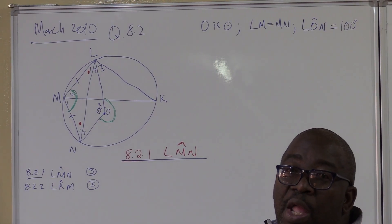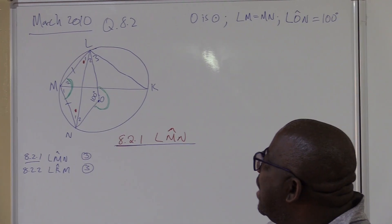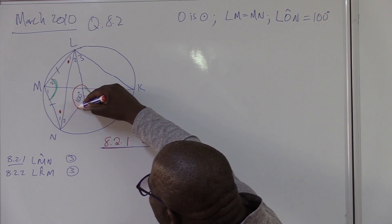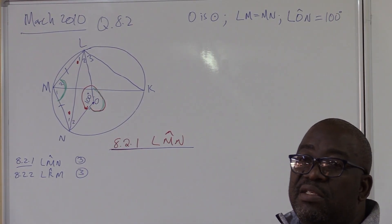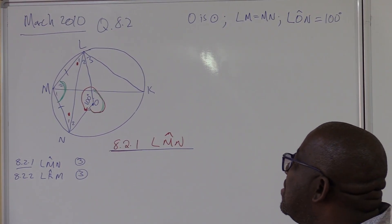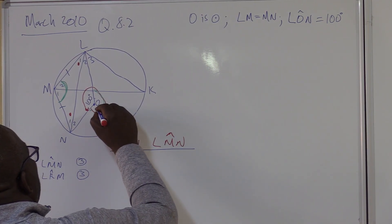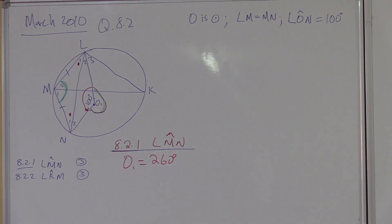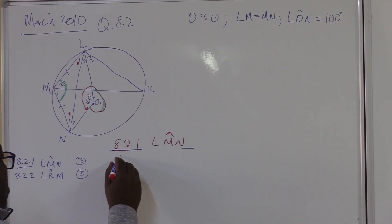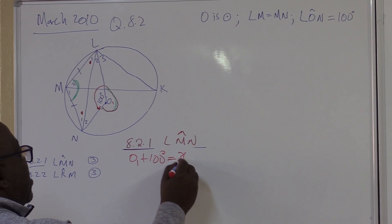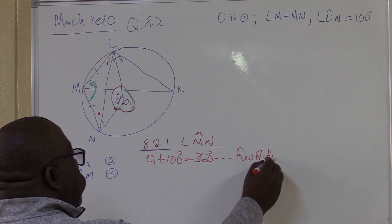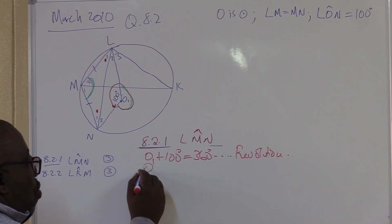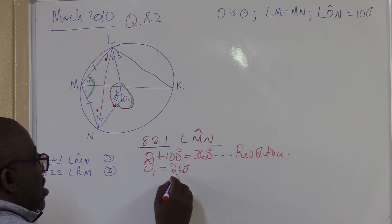Do I know this angle? No. Can I find it? Yes. I go back to grade 8 types of angles — we have six types. This angle that goes all the way around to the same position is called a revolution, equal to 360 degrees. So if this one is 100, then angle O1 will be 260 degrees. We know that angle O1 plus 100 equals 360 degrees — revolution. Therefore O1 equals 260 degrees.